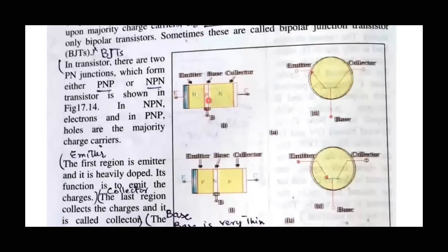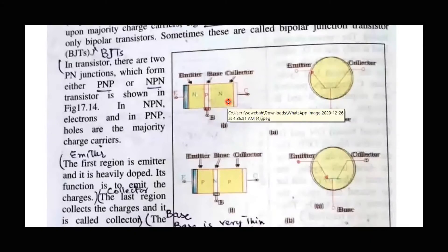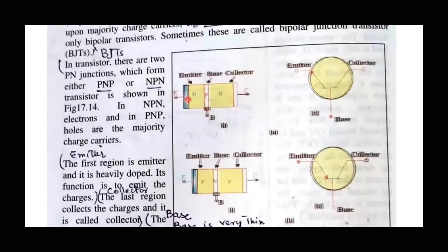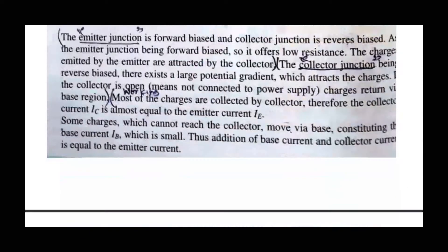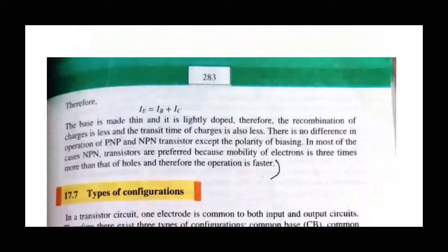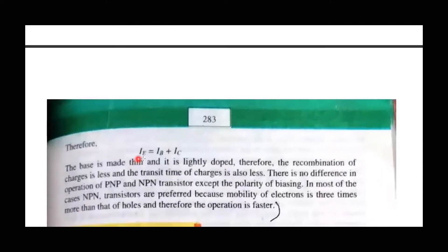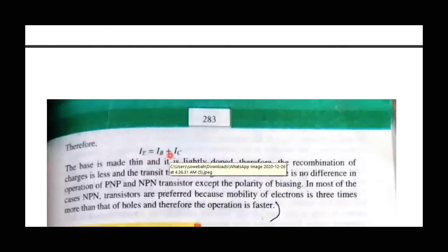The emitter current is divided into two parts: a small portion flows out as the base current, and the majority becomes the collector current. So three currents flow: emitter current, base current, and collector current. The emitter current is the sum of the collector current and the base current: IE = IC + IB. This current equation is the same for both PNP and NPN transistors.